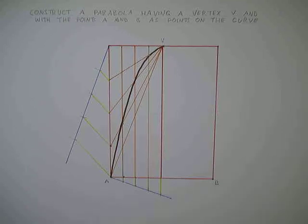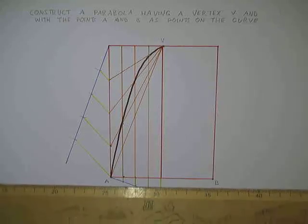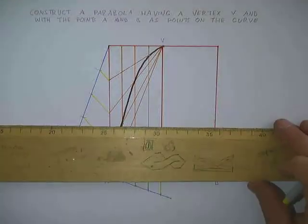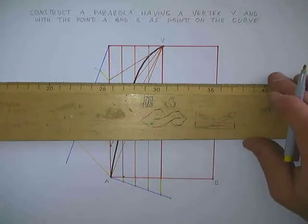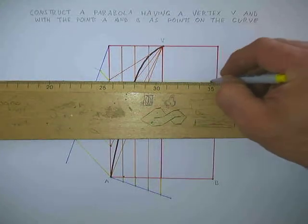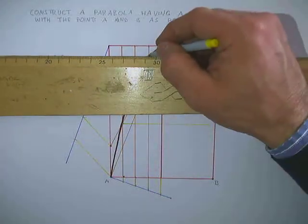For one half of the parabola. In order to find the other half of the parabola, simply project across the points which I found through the axis.